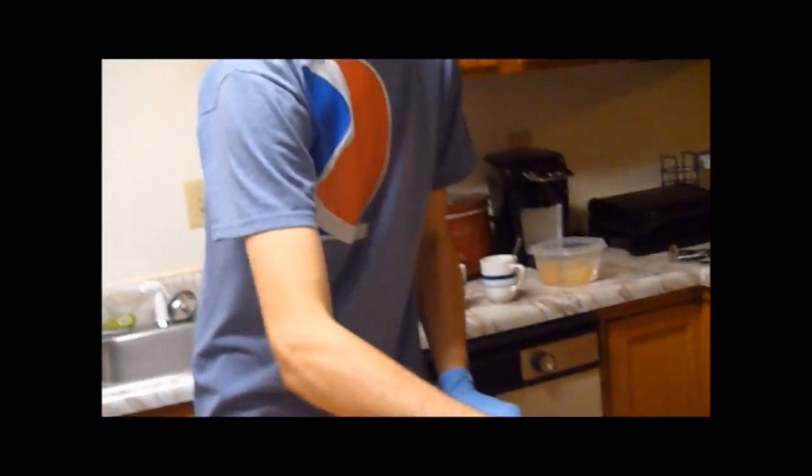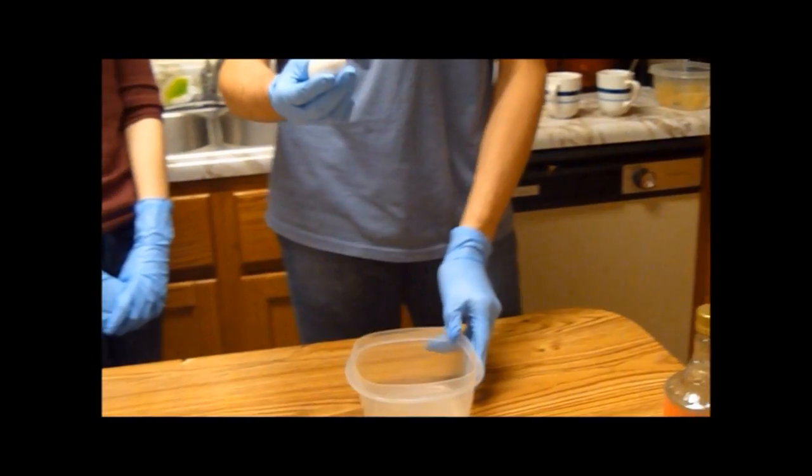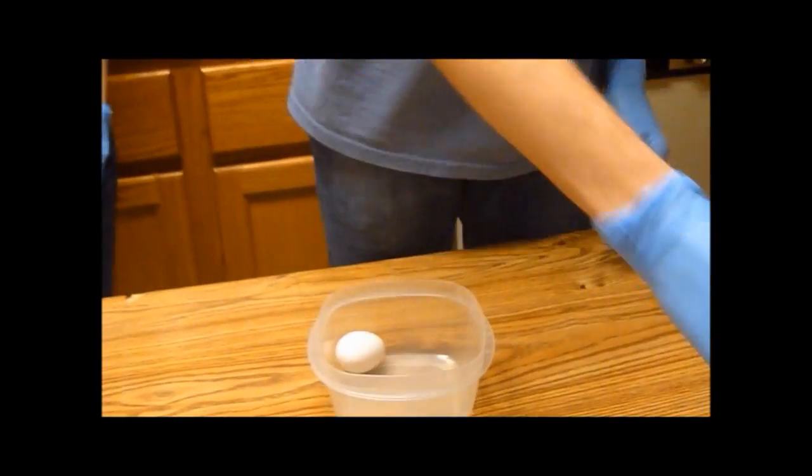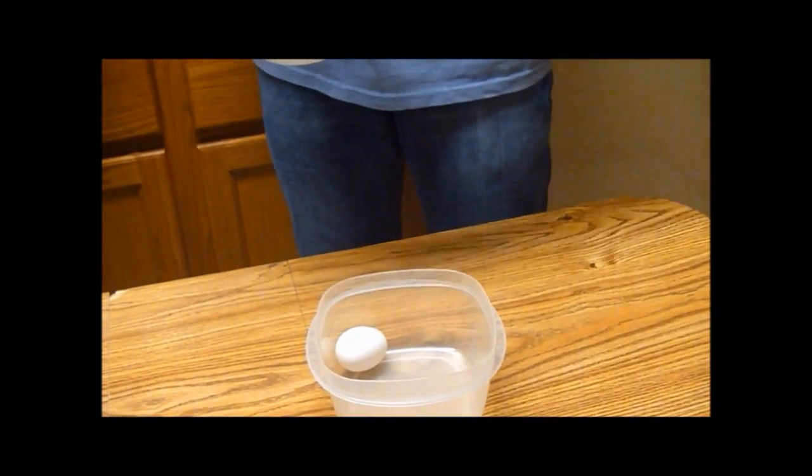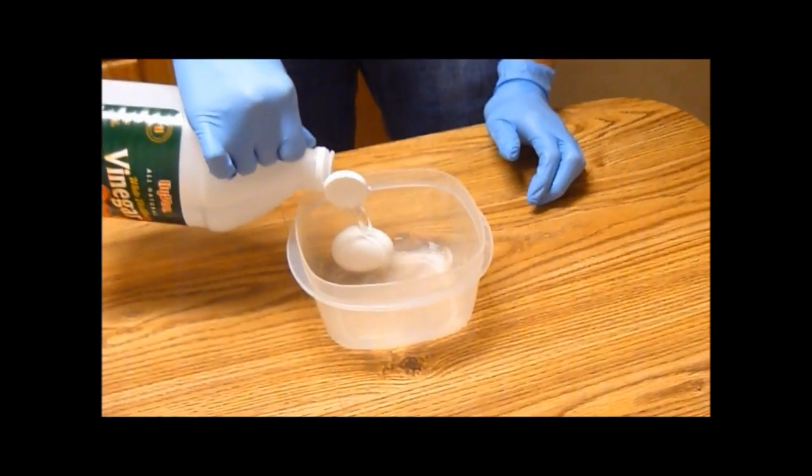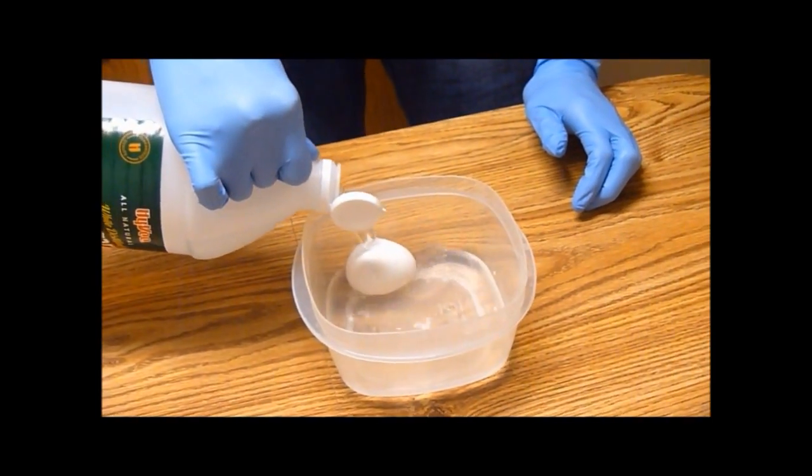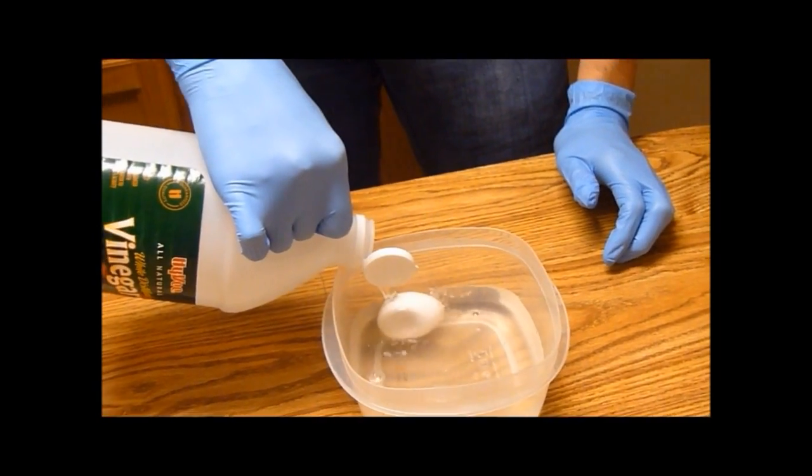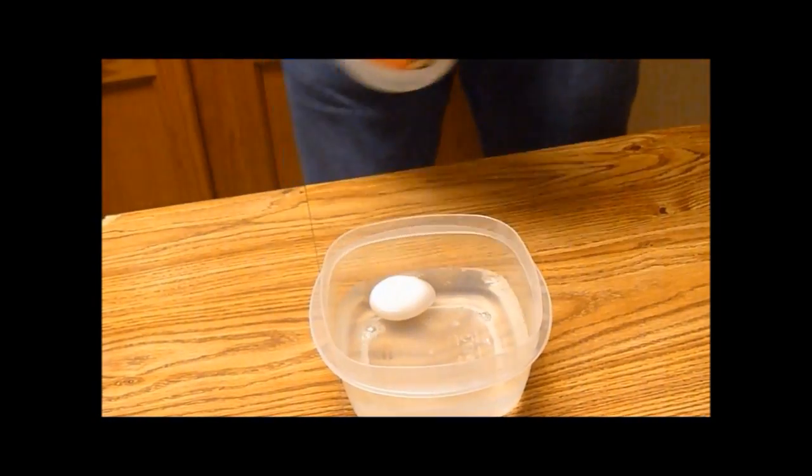So the first step in the osmotic pressure egg experiment is to take your egg, which is a raw egg, and put it into your clear container. Then take some vinegar and pour it over the egg. You want to make sure that there's enough vinegar to cover the egg.